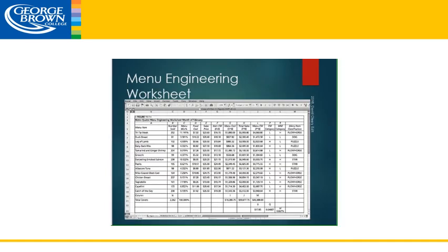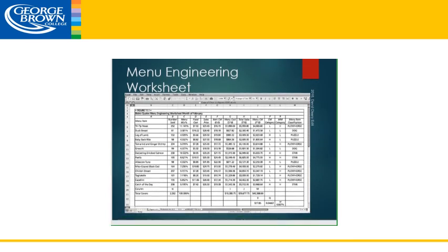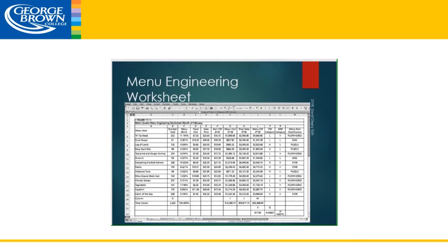So this is what a menu engineering worksheet looks like. We have each menu item in our restaurant, the number sold, and a total amount of menu items sold. We can then calculate the menu mix percentage, which is calculated by taking the number sold and dividing it by the total sold. We identify that item's food cost and its sales price — these will already be established for you — and then you can calculate that item's contribution margin by taking the sales price minus the food cost.